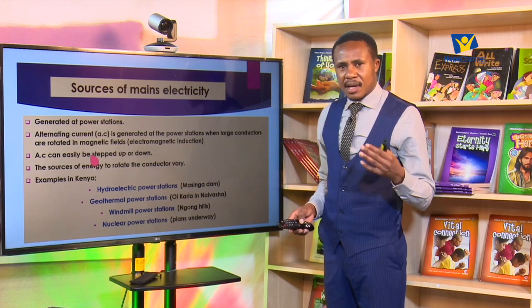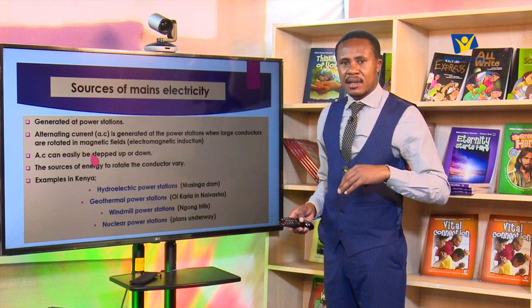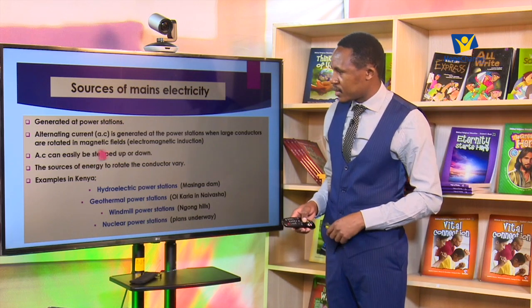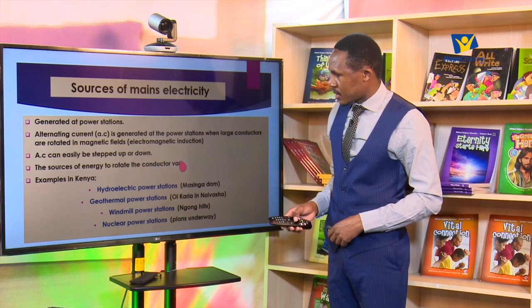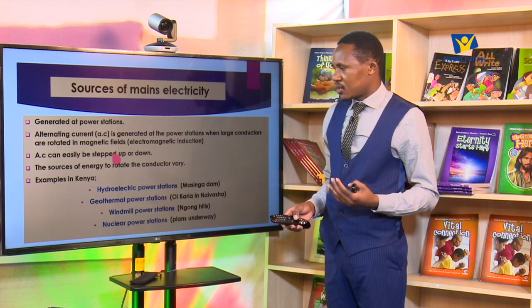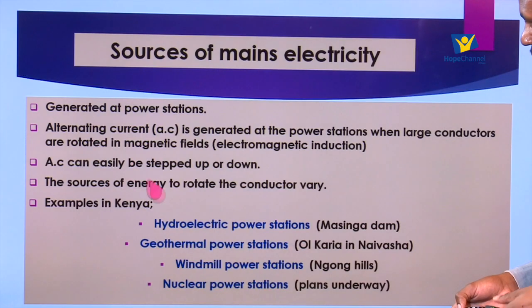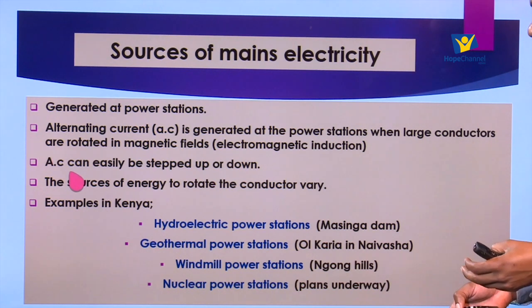When the potential difference is stepped down the current is increased, and so AC is preferred because it can easily be stepped up or stepped down. The source of energy used to rotate the conductor varies from one power plant to another. There are those that make use of energy from the wind, those that use energy from moving water, those that use energy from steam, and those that use geothermal energy from deep in the earth.